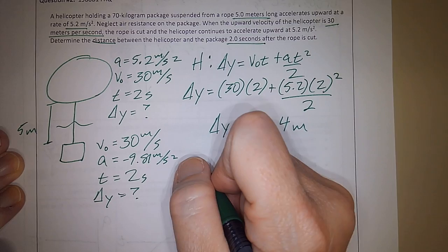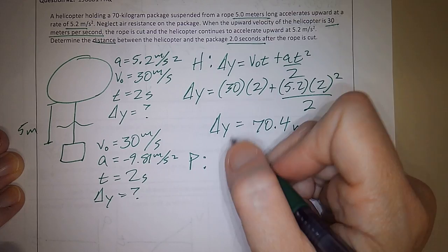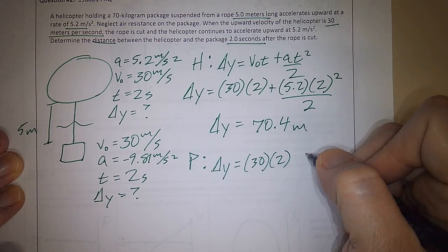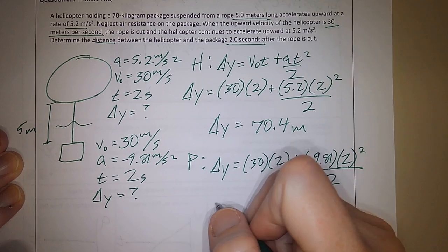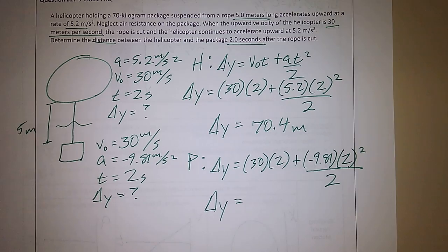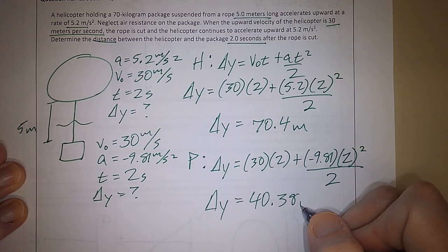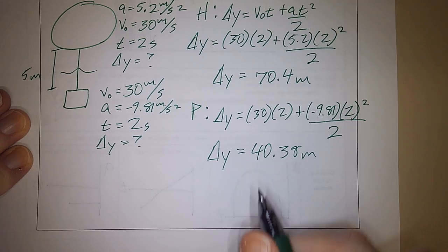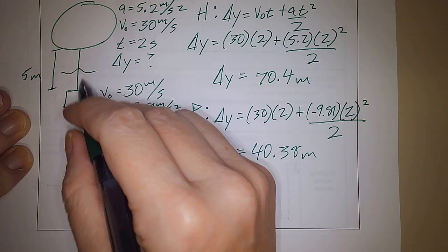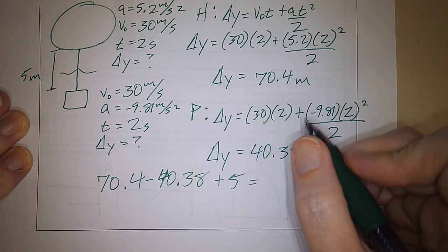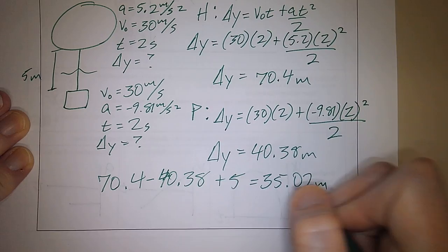And then for the package, do the same thing. So you get 3.38, so now you just find the difference between these, and then add the 5 that you originally had. And you get 35.02, and that's it.